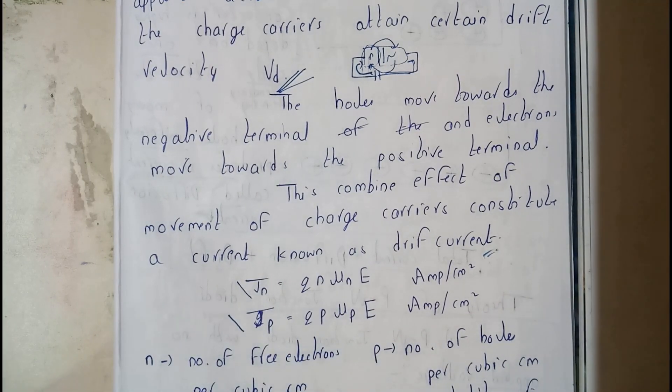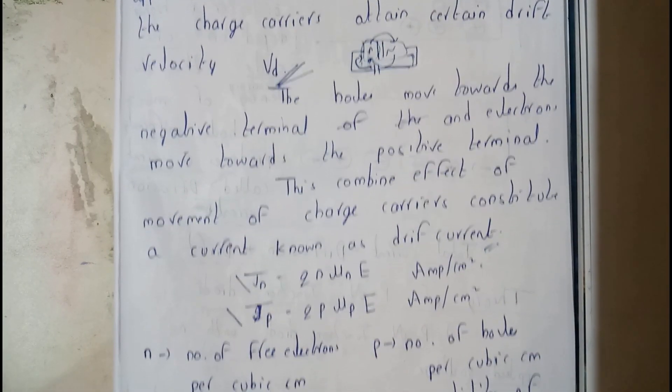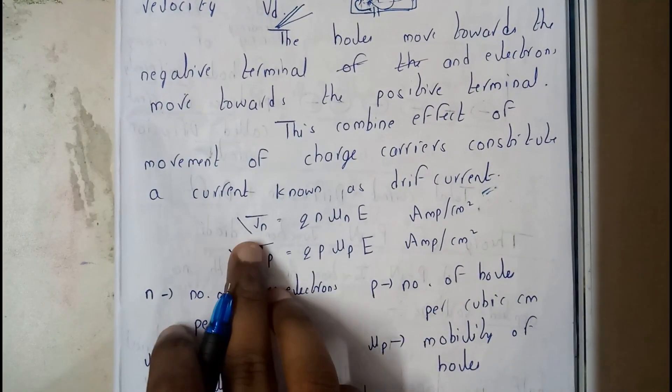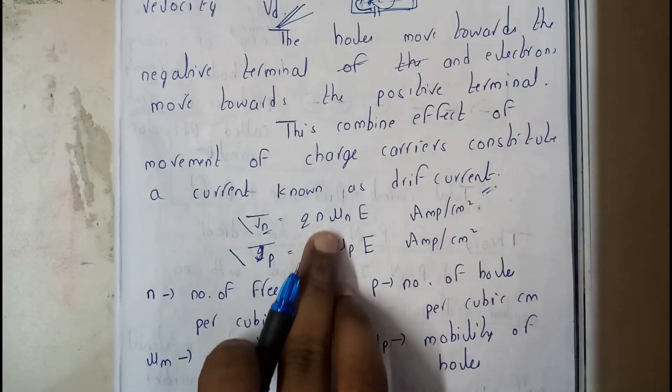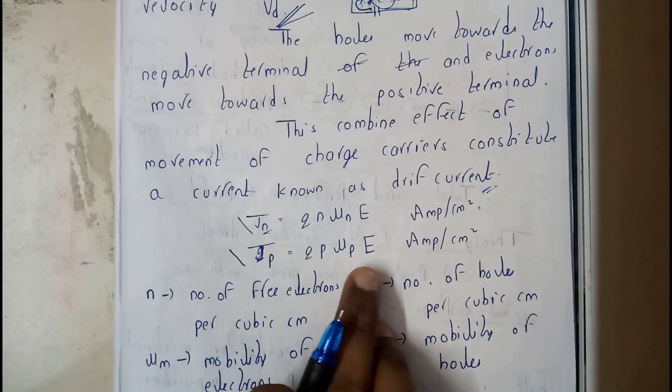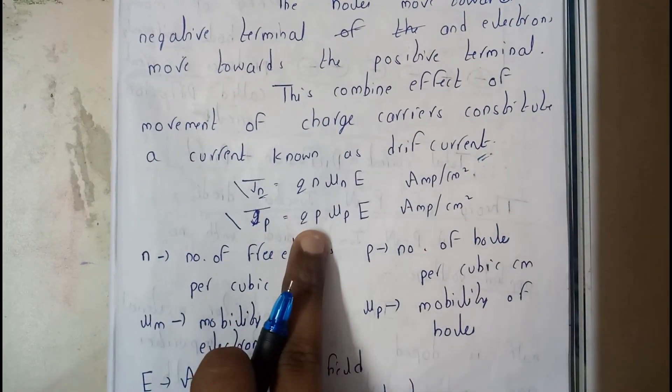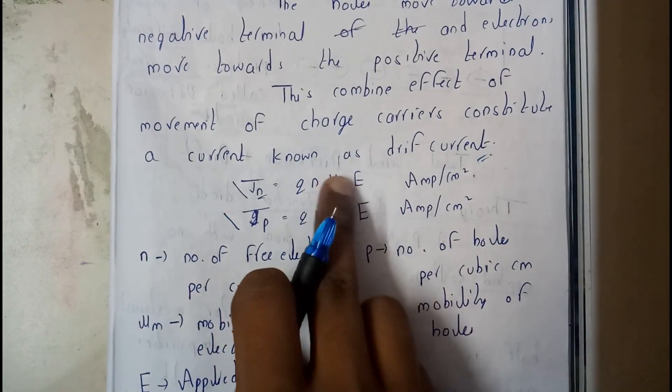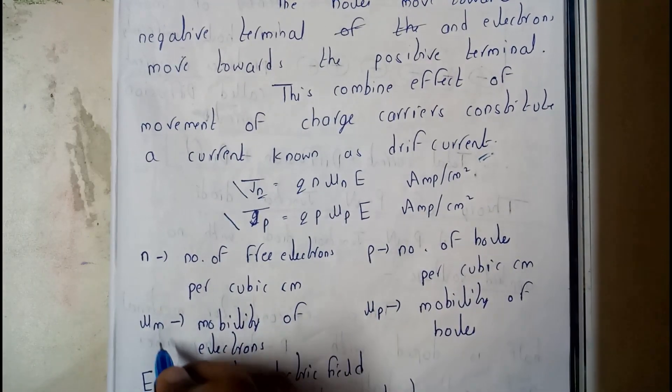There is a formula for holes and electrons. The diffusion current in terms of electrons is J_N = Q × N × U_N × E, and for holes J_P = Q × P × U_P × E, where N is the number of electrons, P is the number of holes, Q is the charge, and U_N is the mobility.